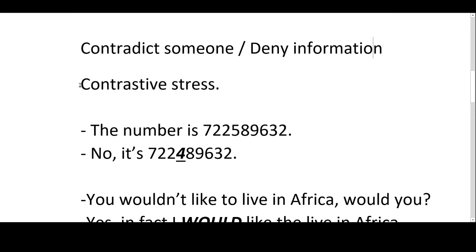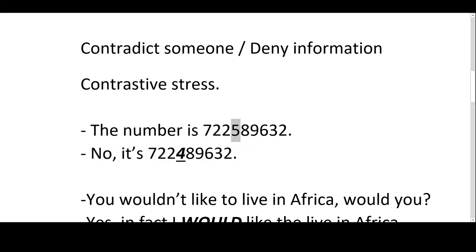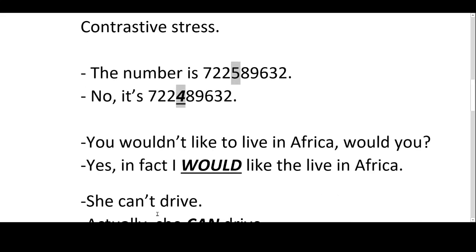So this is based on something we call contrastive stress. For example, if you say to somebody 'the number is 722-589-6321' and they're confirming the number, and you say 'oh no, it's 722-489' — what you're doing there is contrasting. And when you use contrastive stress, you emphasize. For example, you could say 'You wouldn't like to live in Africa, would you?' 'Yes, in fact, I would' — and you would emphasize that, because it makes a contrast. That's called contrastive stress.